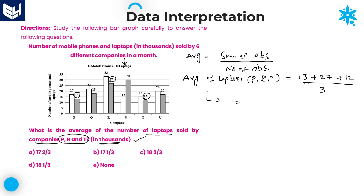Adding the values: 13 plus 27 is 40; 40 plus 12 is 52. So 52 divided by 3. This value doesn't simplify to a whole number, and the options are given in mixed fraction form. Converting: 3 goes into 52 seventeen times with a remainder of 1, so the answer is 17 and 1/3 thousand. Option B is the right answer for this question.